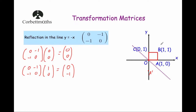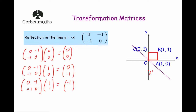Next, the point at B, which is (1, 1). So whenever this is reflected it should go to (-1, -1). Let's check: matrix 0, -1, -1, 0 multiplied by point B (1, 1). We get 0×1 = 0, -1×1 = -1, adding them together is -1. Second row: -1×1 = -1, 0×1 = 0, adding them together is -1. So B' is the point (-1, -1), there.